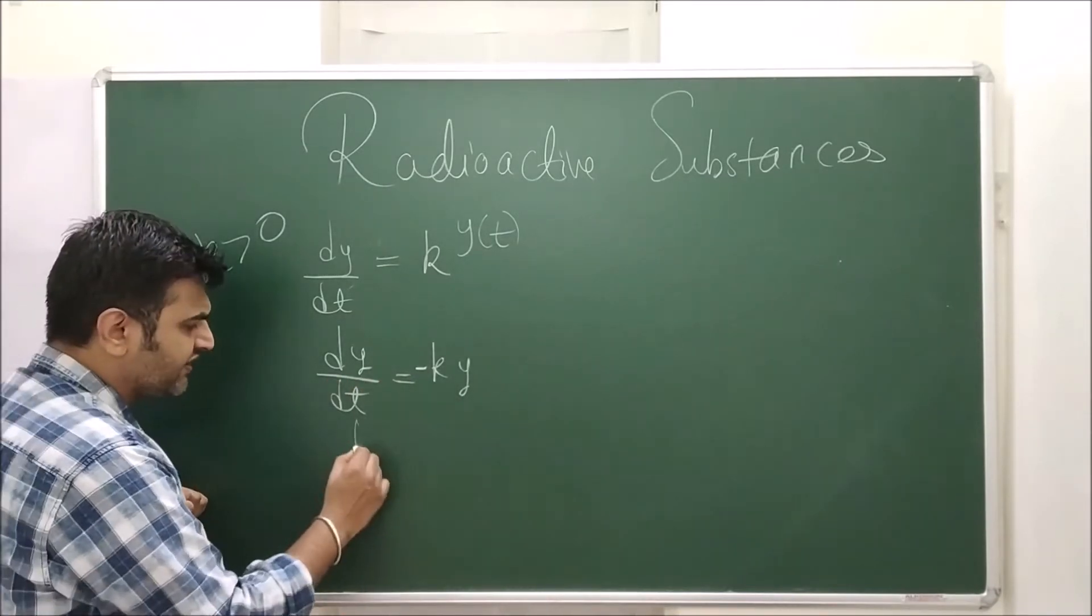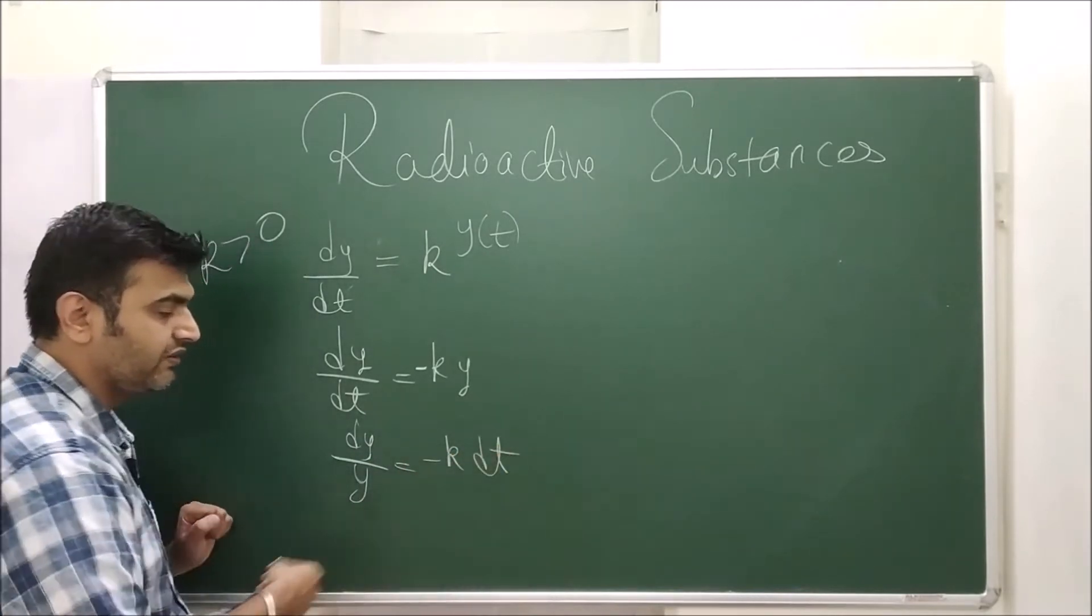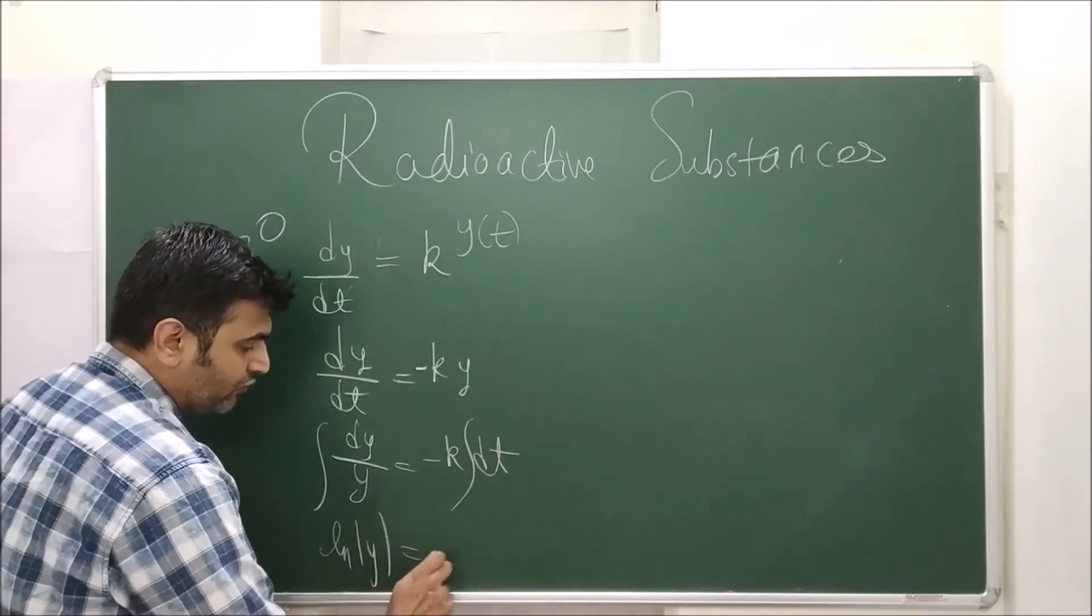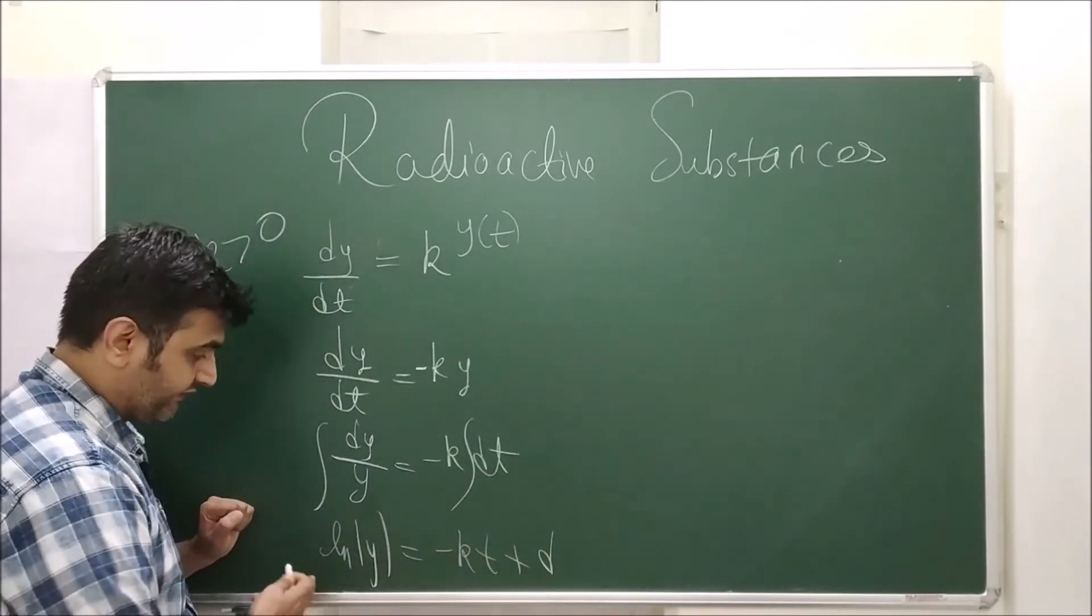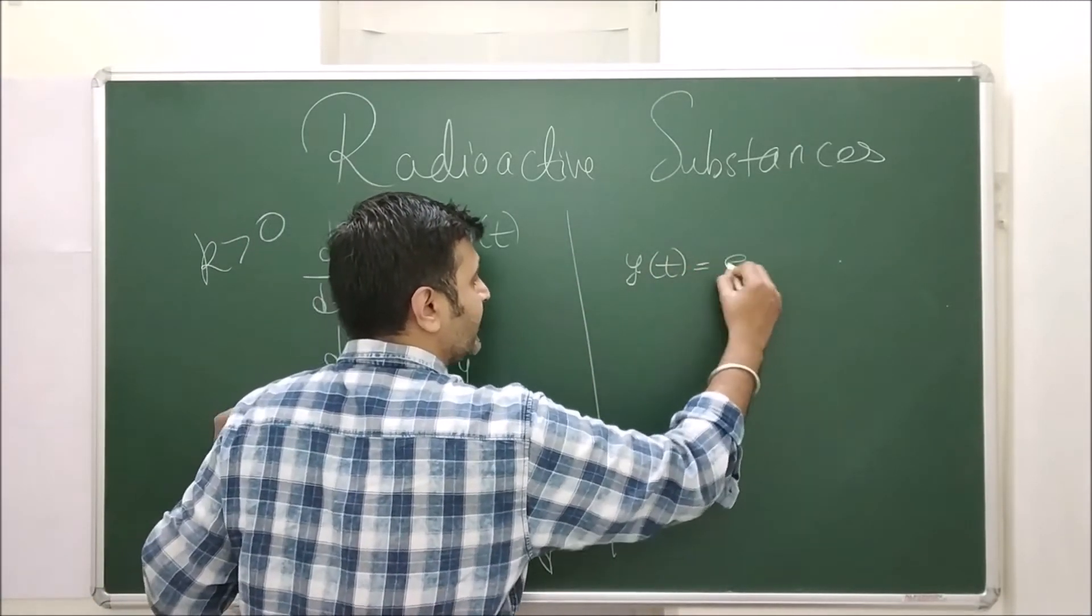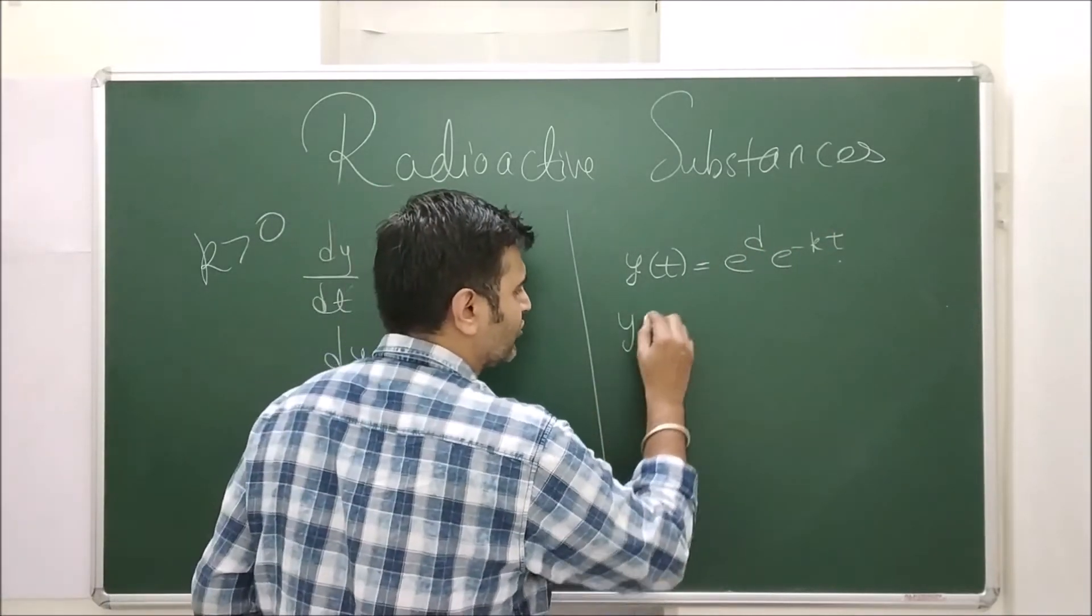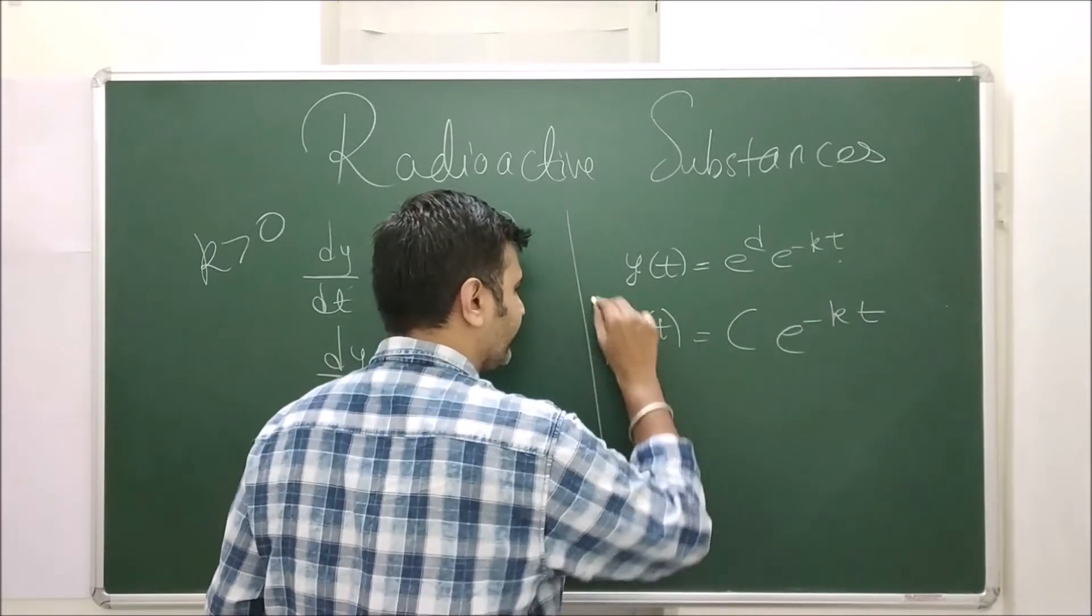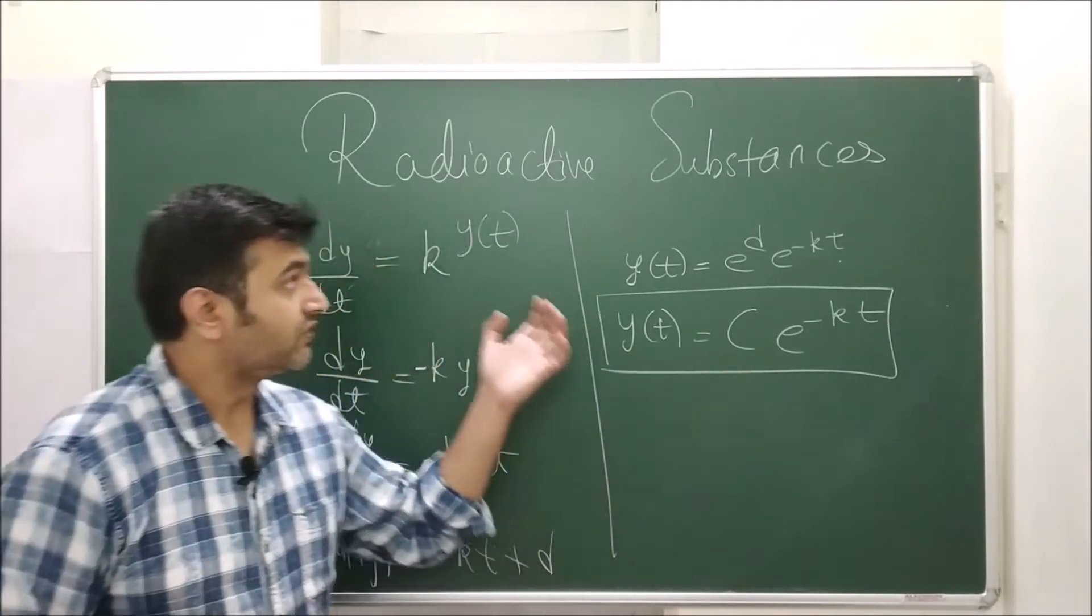Once you have the differential equation, you can apply variable separable method. You separate the variables and integrate. This is ln(y) = -kt plus some constant d. When I take exponential on both sides, I have y(t) = e^d times e^(-kt). Let me call e^d as another constant c. So y(t) = ce^(-kt). This is the solution to the given problem.